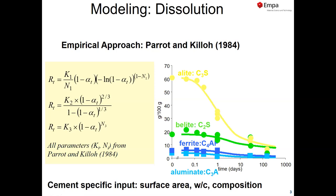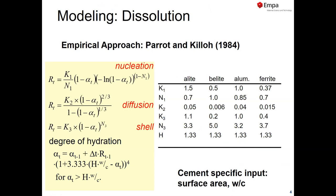There are a number of different equations you might find in literature, and the very simple one which works fine for most Portland cement is the empirical approach of Parrot and Killoh, which has been published more than 30 years ago. Basically they just have a set of three equations and the only things we need as input are the composition, the surface area, and the water-to-cement ratio. It is always the lowest of these equations that steers the cement reaction. You also can use any other set of equations you want — it has nothing to do with a real mechanistic description of cement hydration, it's just an empirical law.